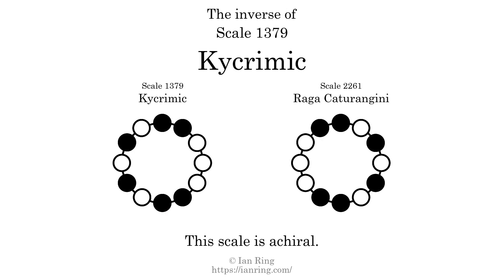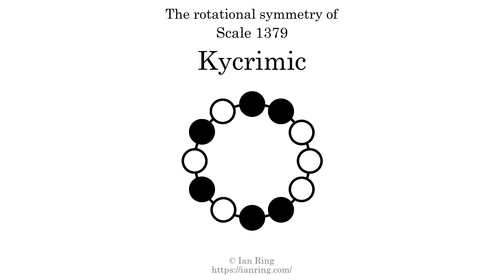The inverse of a scale is a mirror image — it is what you get when the sequence of intervals is reversed. The inverse of this scale is scale 2261, also known as Raga Kacharangani. This scale is achiral, since it can transform into its own reflection by a rotational transformation. This scale has no rotational symmetry. For even more detail about this scale, visit ianring.com/musictheory/scales/1379.